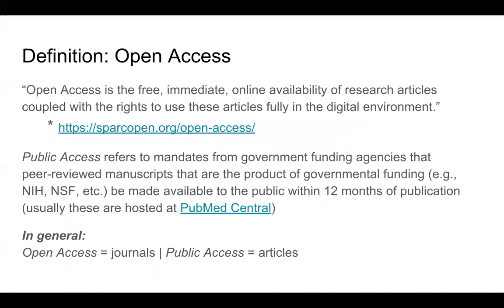You will sometimes hear about the term predatory publishing being used in a discussion of open access. These are two separate issues and should not be conflated. Open access, or OA, is used broadly to describe a movement to make scientific research output freely available to anyone, regardless of whether they subscribe to a journal or have access via an institution. Although OA has been talked about for decades, as a movement it gained momentum in the early 2000s to counter the cost of online journals.